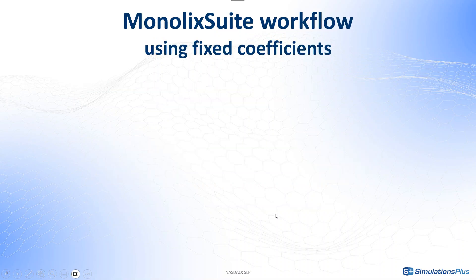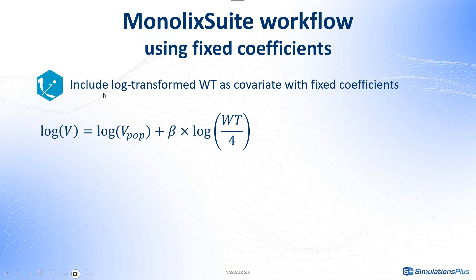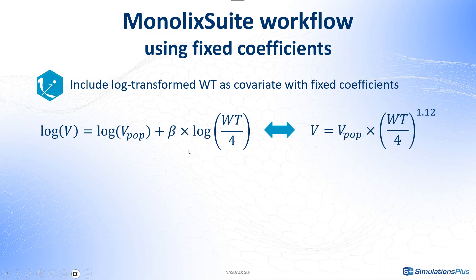Starting from our current Monolix project, there will be two main steps. First, in Monolix, we will add the log-transformed monkey weight as a covariate with fixed coefficients. For example, the equation for the volume would be the following, which is equivalent to this one. When defining the log-transformed covariate, I will center the covariate using the typical weight of a monkey, so 4 kg. And the beta coefficient will be fixed according to the table of the previous slide, so 1.12 for the volume.